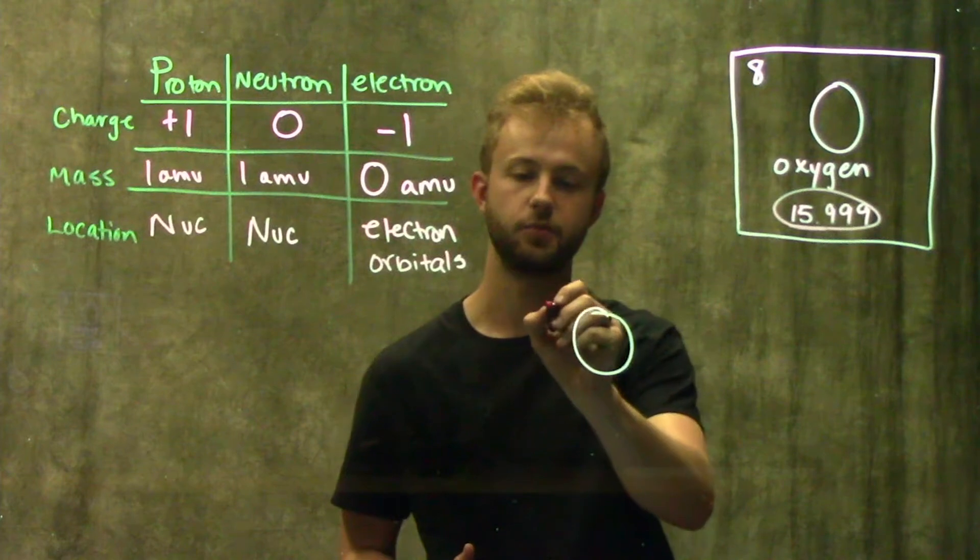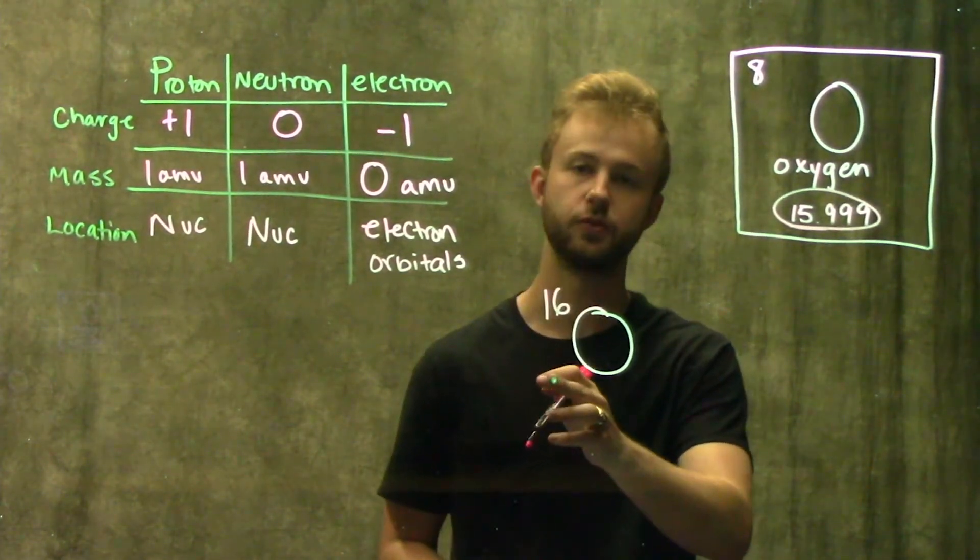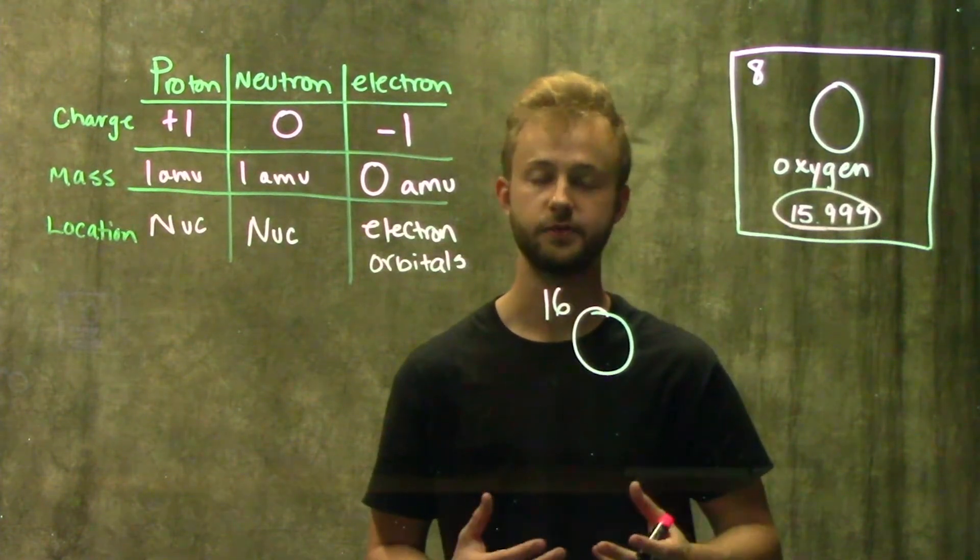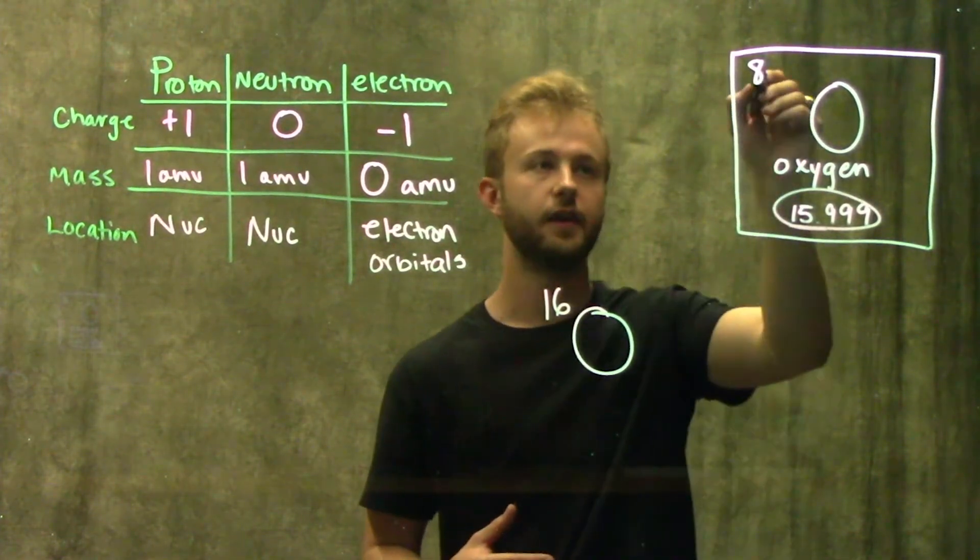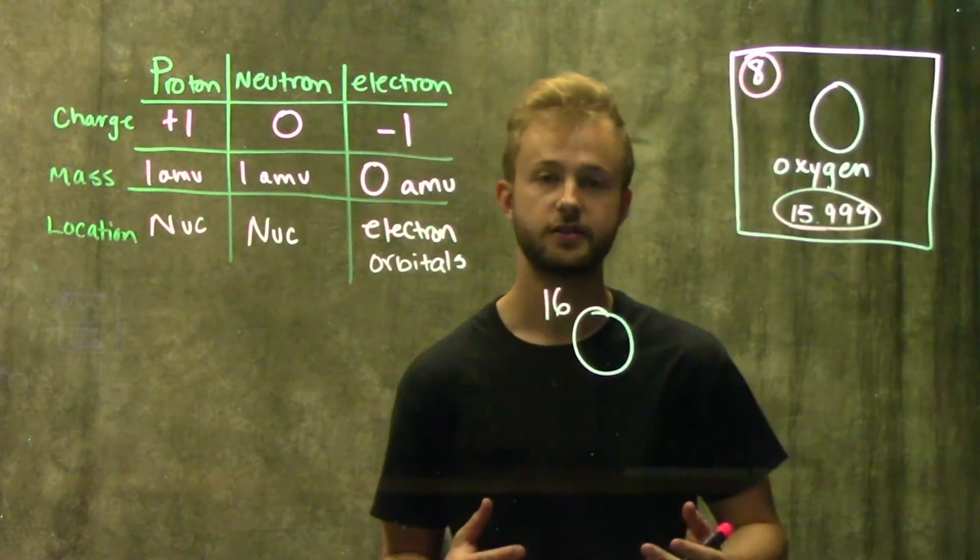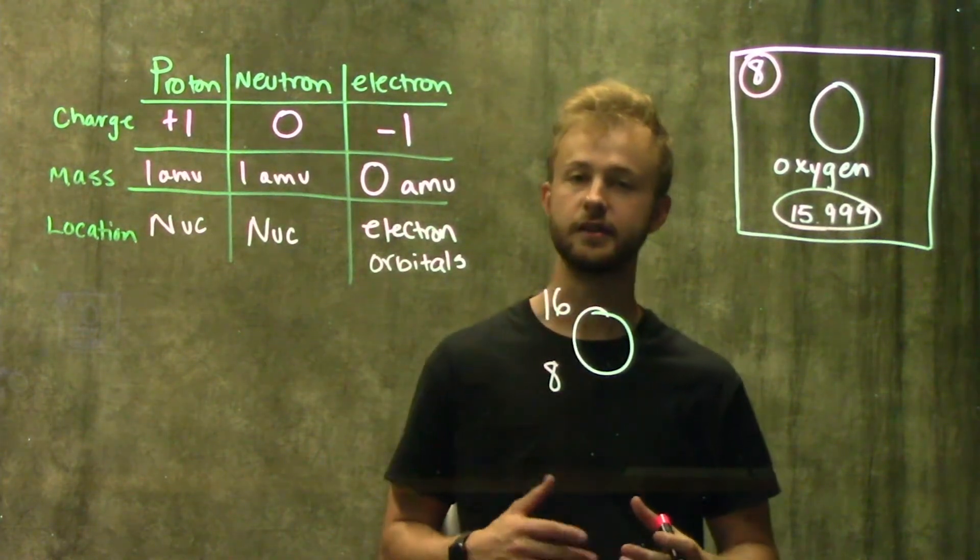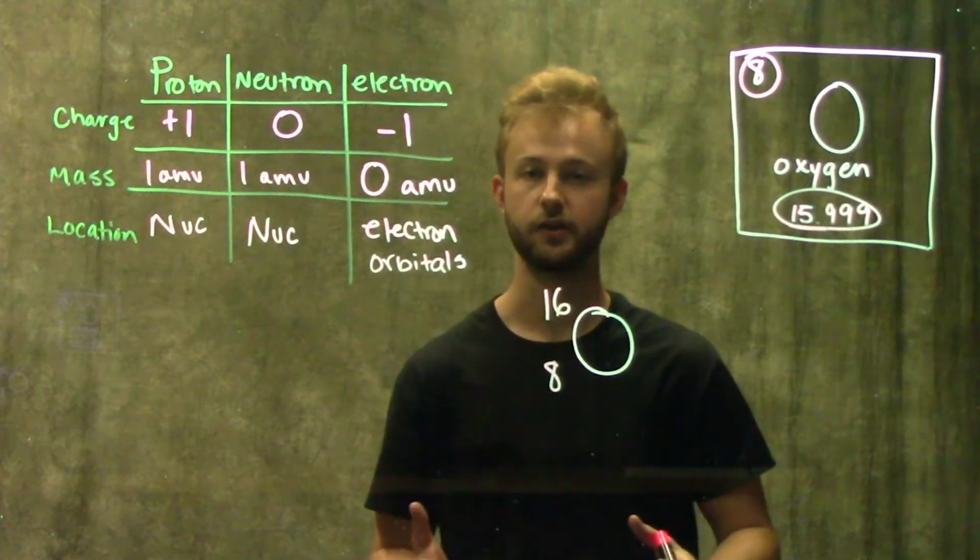For oxygen, it's 15.99, but we normally round that up to 16. So now in this bottom left corner is where we're going to put the atom's atomic number. We find that right here on the periodic table. And the atomic number is going to tell us how many protons this atom has. And the atomic number is very important because it's what distinguishes one element from another element.